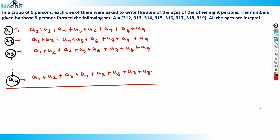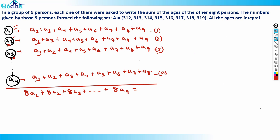When we add all nine equations, each age appears in eight of the nine equations (it's absent only from its own equation). So the total sum equals 8a1 + 8a2 + 8a3 + ... + 8a9, which is 8 times the sum of all nine ages.